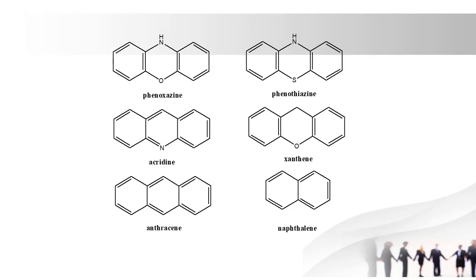Next one is anthracene and naphthalene. Naphthalene contains 2 phenyl rings and anthracene contains 3 phenyl rings. The drugs naproxen and propranolol contain the naphthalene ring.